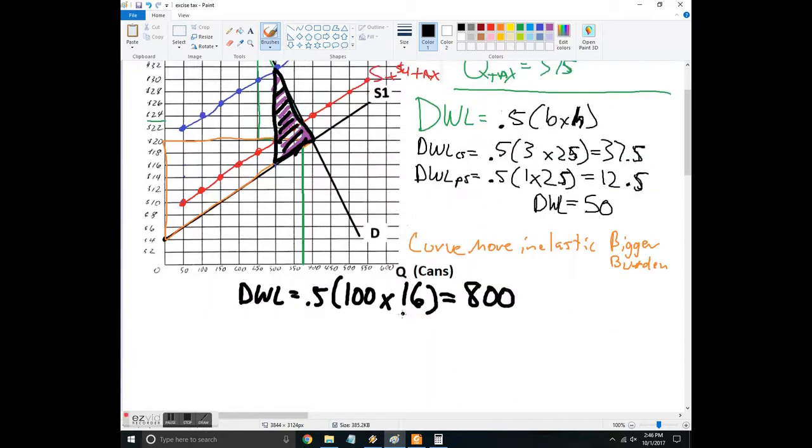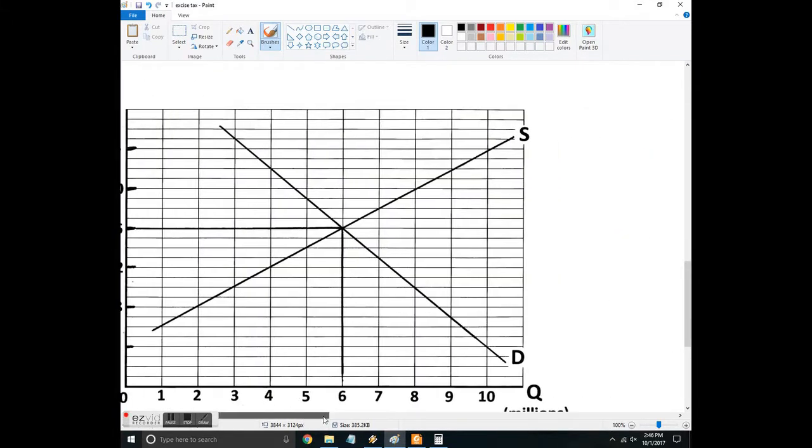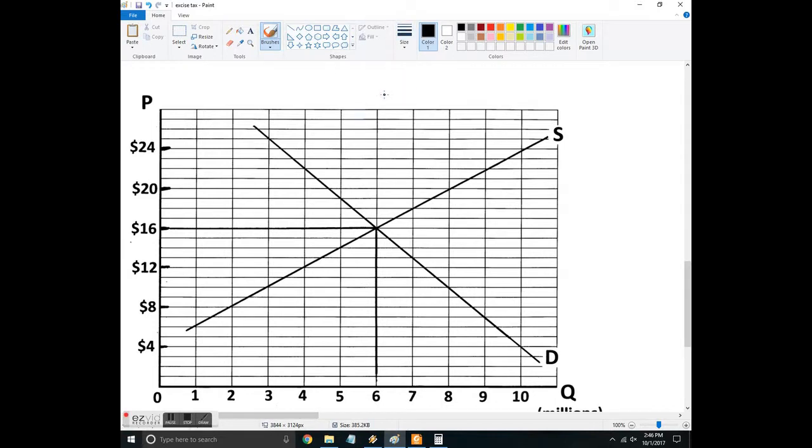Let's do one more example here. This is a different market, different elasticities. So let's say that for whatever reason, this market is generating a, let's see what the units are here. So 12, 13, 14, 15, 16. So these are $1 each. So let's say it's a $5. So this is some kind of widget market and there's a $5 excise tax, which again means per unit.